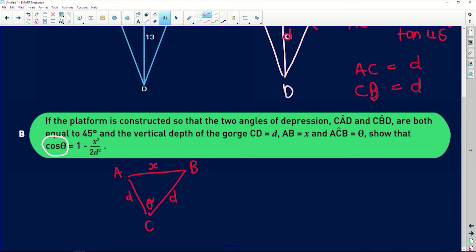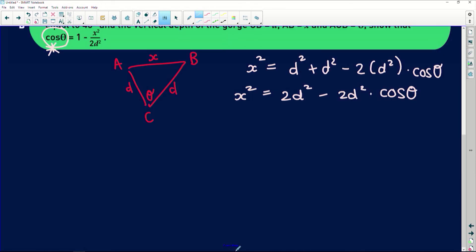Okay, so now if we look in that top triangle there, we have ABC. This is given to us as x, this was theta, and we've just found that these two sides are equal to d. So let's use the cos rule: x squared is equal to d squared plus d squared minus twice their product, 2d squared, multiplied by cos of their included angle. That equals 2d squared minus 2d squared multiplied by cos of theta.